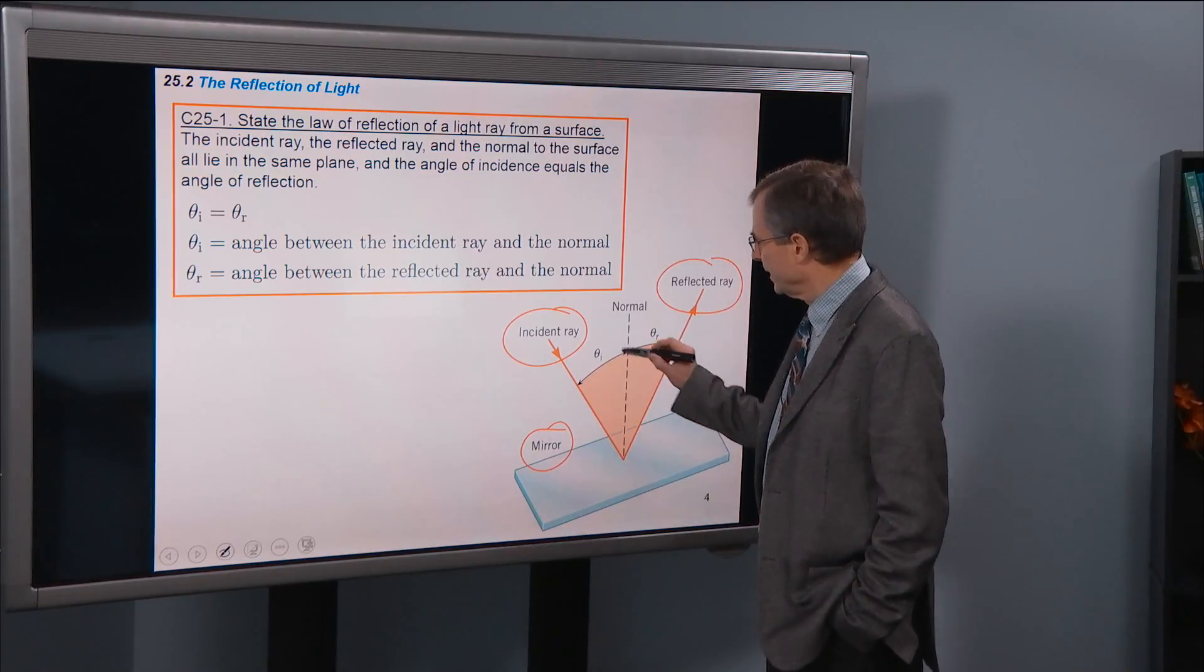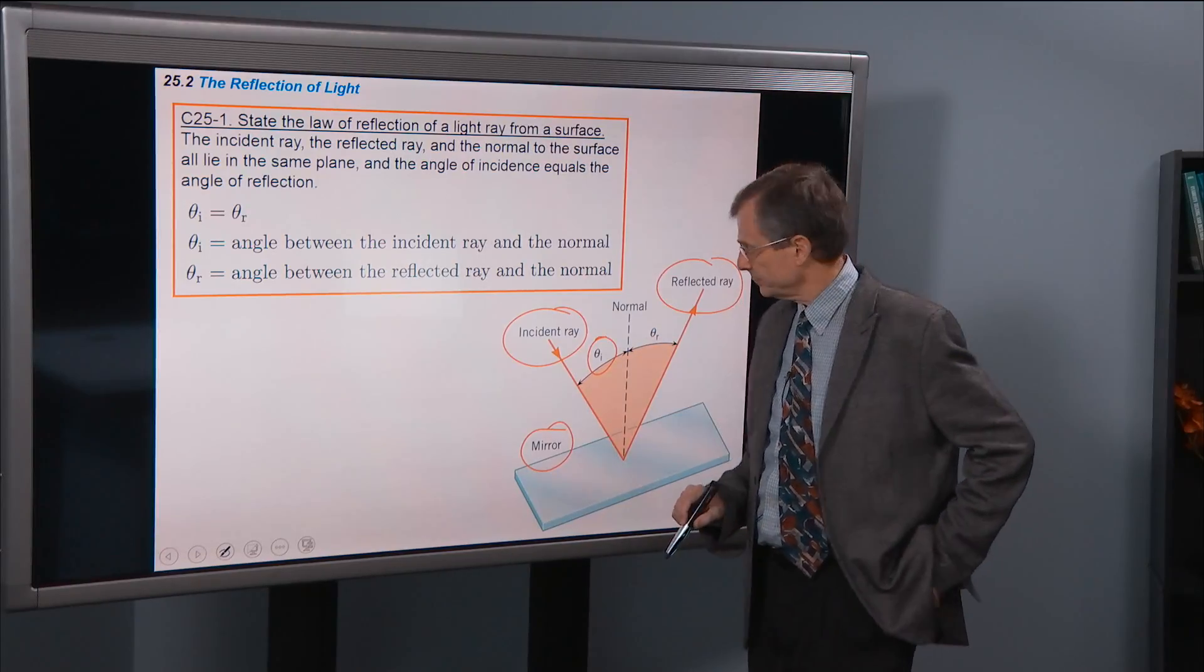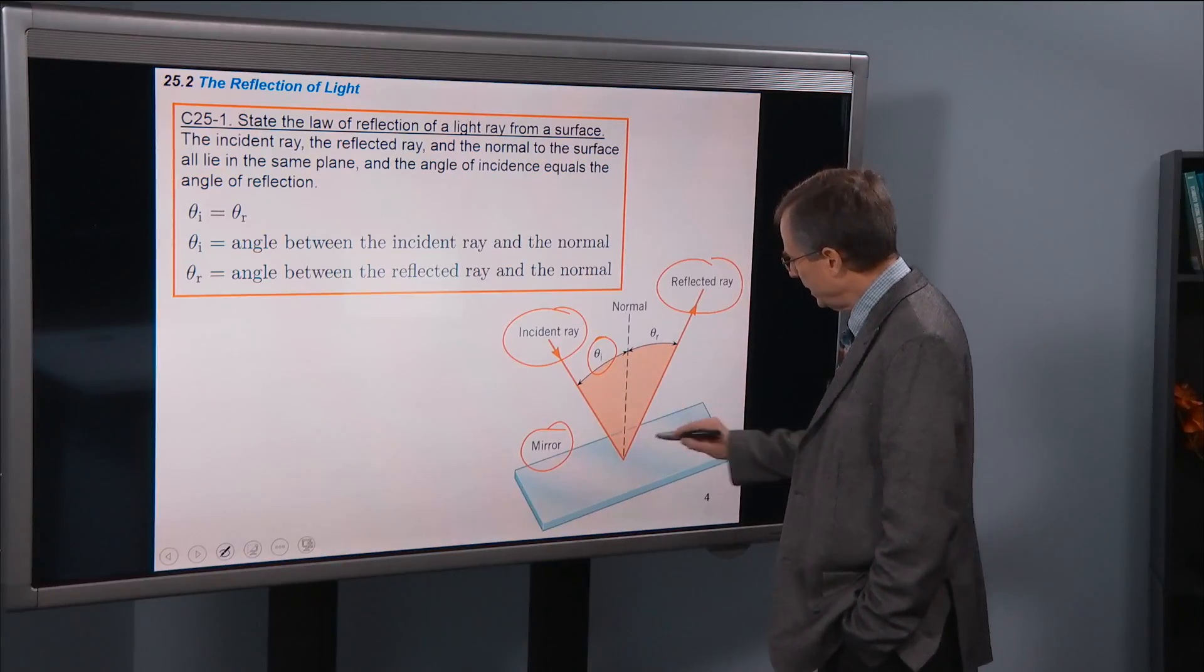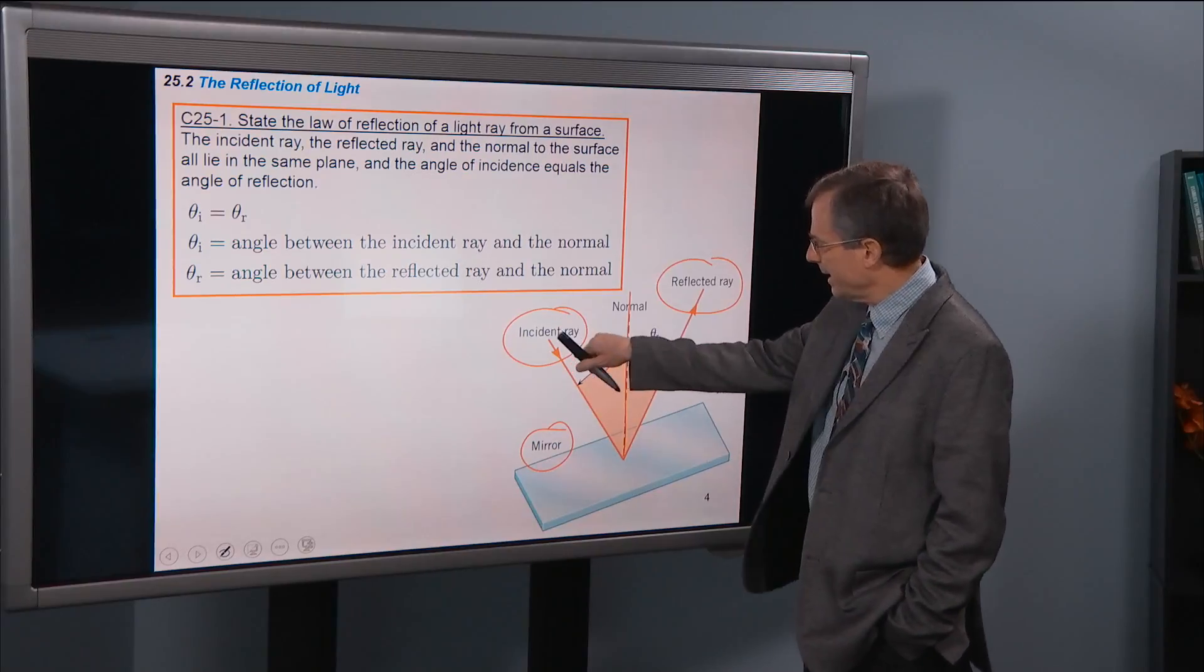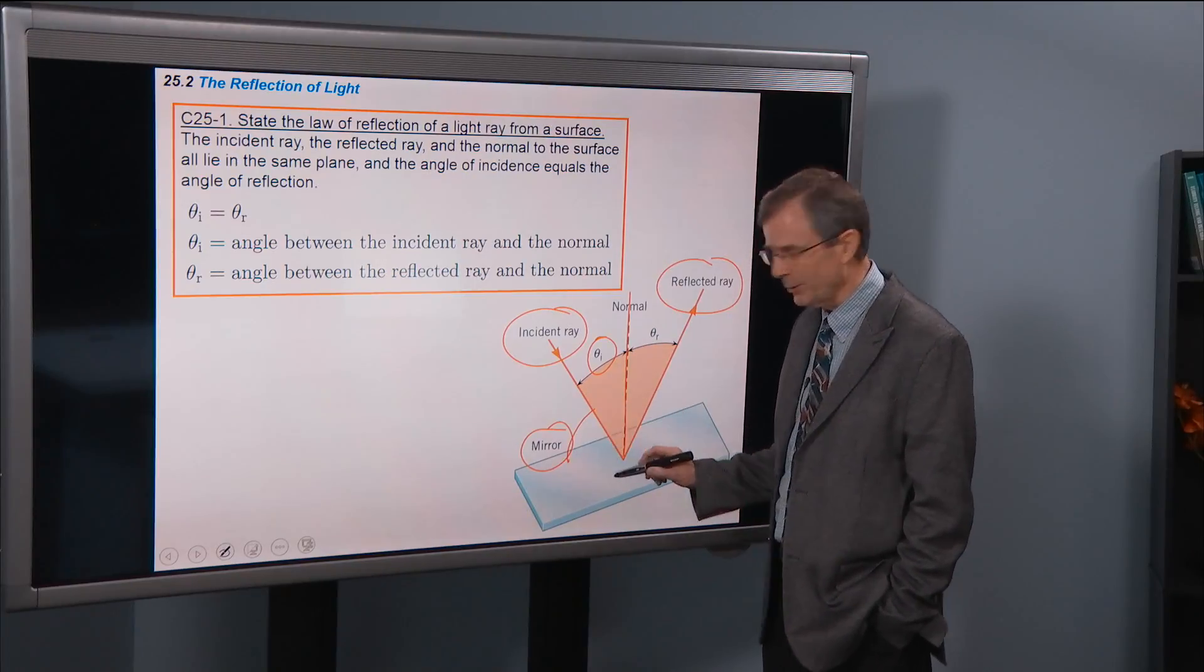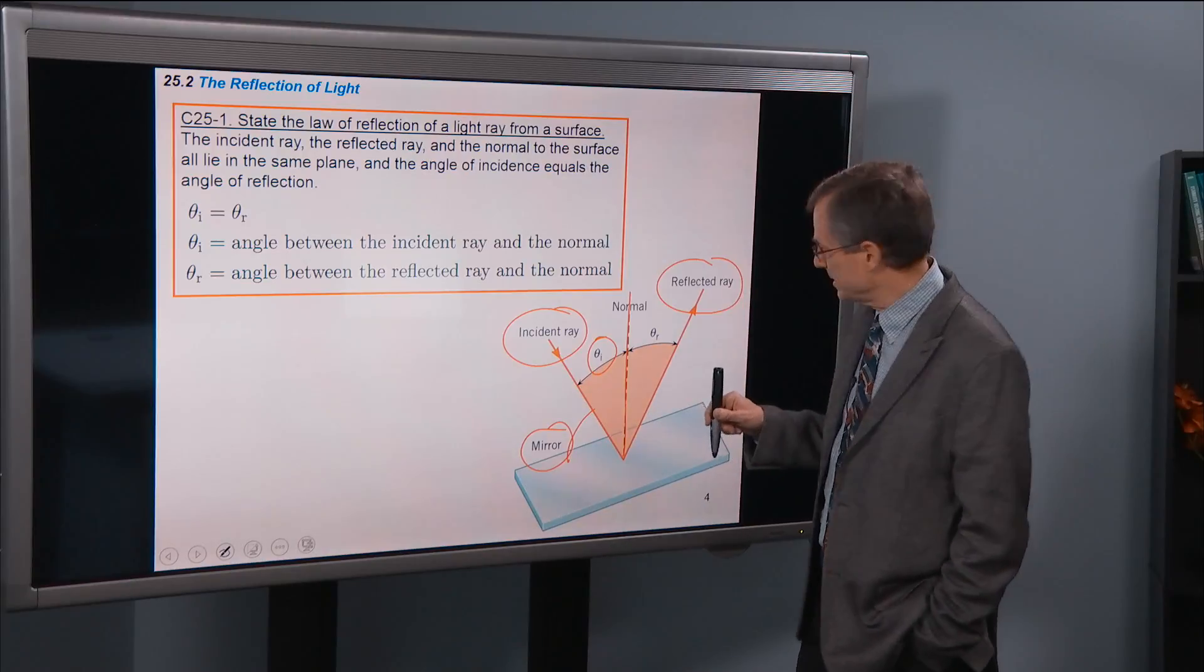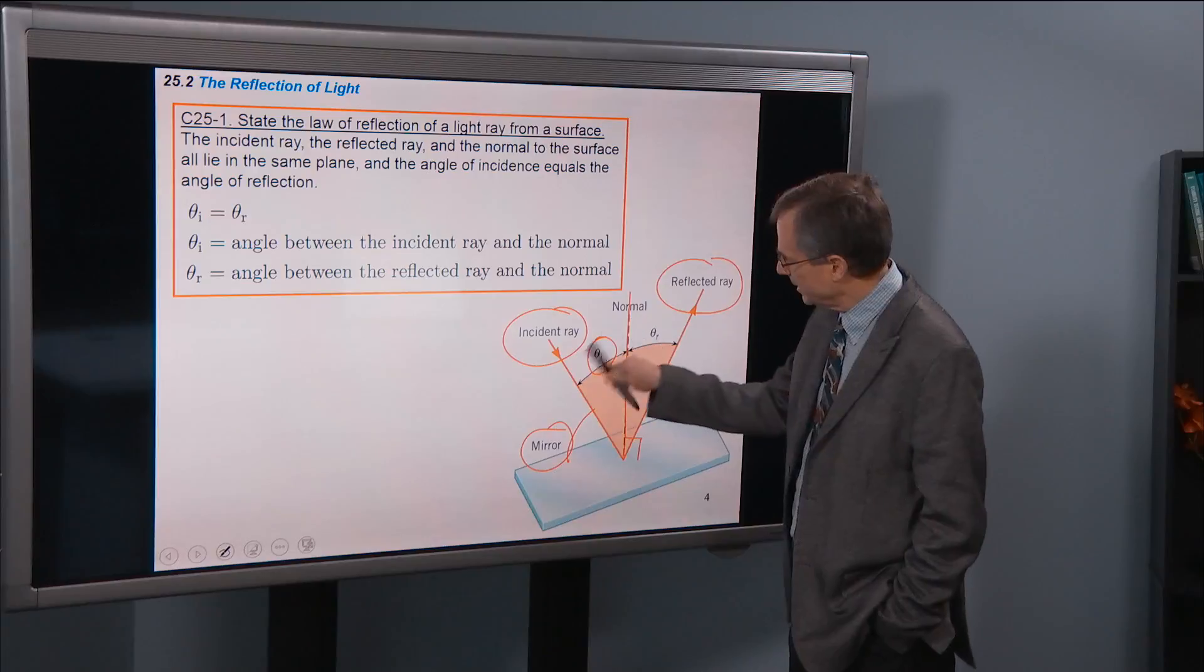And we're going to define two angles that are pertinent here. The angle of incidence, θ sub i, i for incidence, is the angle between the normal, that's the perpendicular to the surface, and the incident ray. So it's easy to confuse that. It's not the angle between the surface and the ray, but instead is the angle between the normal, the perpendicular to the surface, and the ray.